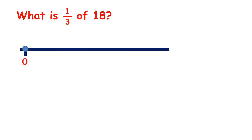Now we have: what is a third of 18? Here we have a third with the 3 written underneath the 1. So like with a half, sometimes you have the 3 next to the 1 with a diagonal line, and sometimes you have the 3 underneath the 1. Either way, 1 third means the same as divide by 3.